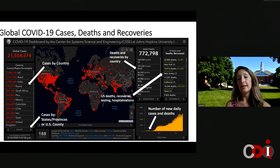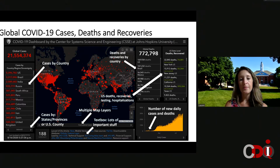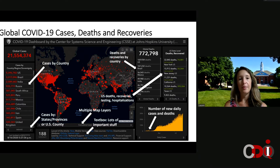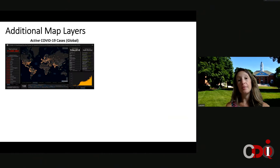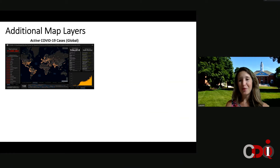We have new daily cases and new daily deaths shown as well. If you tap through on the bottom, we actually have multiple map layers that illustrate this information in a few different contexts. From the start, to me the value of this dashboard was this global perspective. The map with the big red dots is the one that gets all the attention, but I think there are actually more important layers shown underneath.